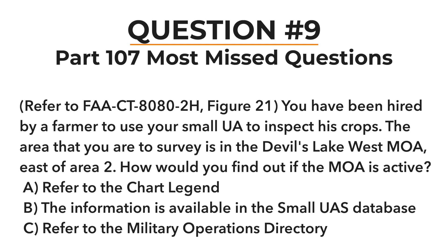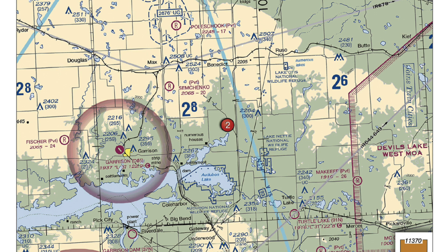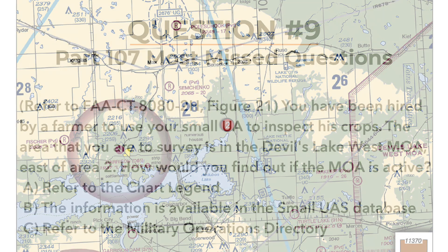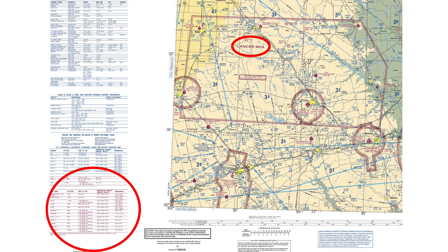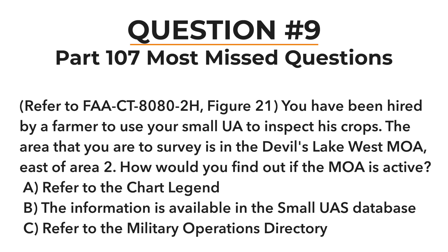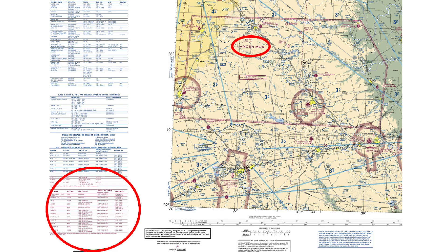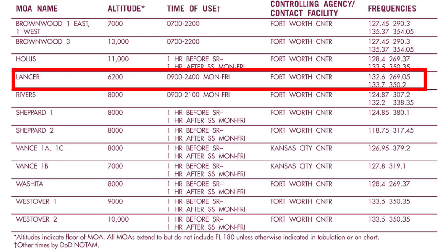Question nine is another chart question. Refer to figure 21 — you've been hired by a farmer to inspect his crops in the Devil's Lake West MOA, east of area two. How would you find out if this MOA is active? Options are: refer to the chart legend, find the information in the small UAS database, or refer to the military operations directory. Options B and C aren't really things that exist, so through process of elimination, the best answer is A — the chart legend. That'll show you when that MOA is active, the dates and times, who controls it, and how to contact them on the radio.